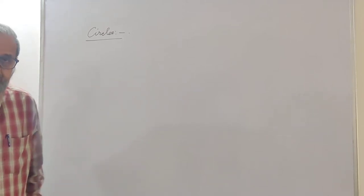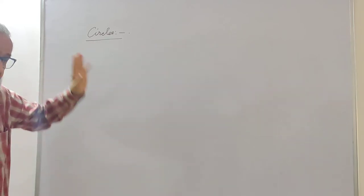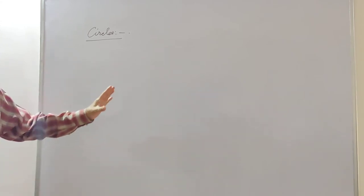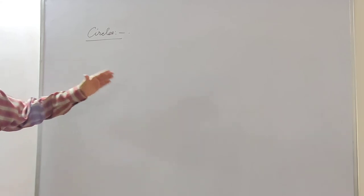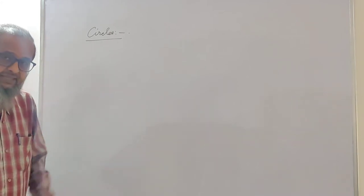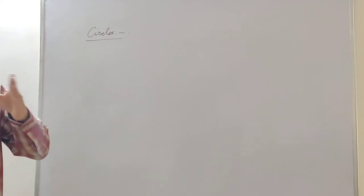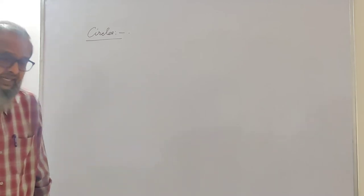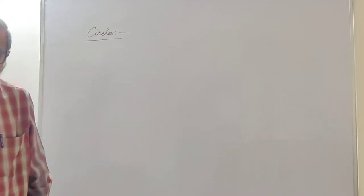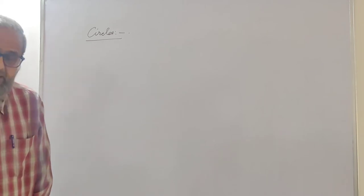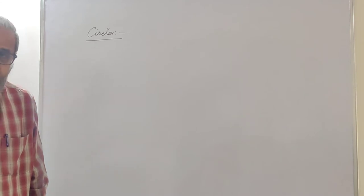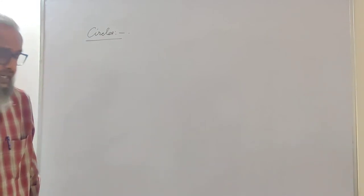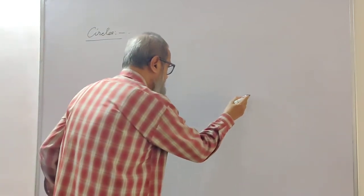Hi friends, today I am starting a new lesson in your syllabus: the study of circles. This is something which you already know, and we are going to further increase our knowledge. A circle can be defined as a set of points which are equidistant from a fixed point called its center, and that fixed distance is known as its radius. It can also be defined as the locus of a point which moves such that its distance from a fixed point is always constant.